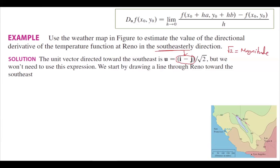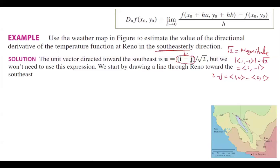When forming i minus j: i minus j equals (1, 0) minus (0, 1), which gives (1, −1). So (1, −1) represents the southeast direction. The magnitude of (1, −1) is square root of 2, and since we need a unit vector, we divide by square root of 2.